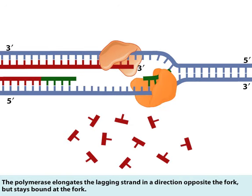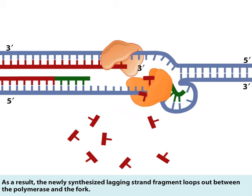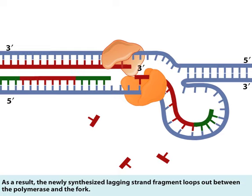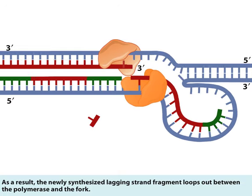The polymerase elongates the lagging strand in a direction opposite the fork but stays bound at the fork. As a result, the newly synthesized lagging strand fragment loops out between the polymerase and the fork.